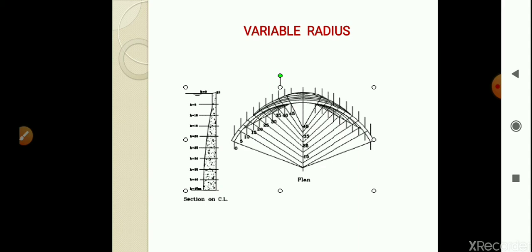The variable radius arch dam is also known as variable center arch dam, because if we check the centers of the horizontal arch rings at each elevation, they do not remain on a single line. It is generally adopted in V-shape valleys and has greater arch efficiency compared to constant radius arch dam, resulting in less concrete requirement.